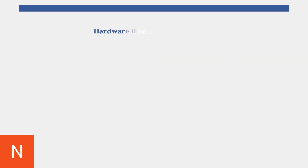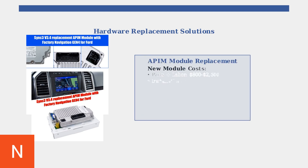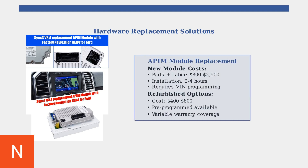When software solutions don't work, hardware replacement becomes necessary. New APIM modules cost between $800 and $2,500, including parts and labor, requiring 2 to 4 hours for installation and VIN-specific programming. Refurbished modules offer a cost-effective alternative at $400 to $800.